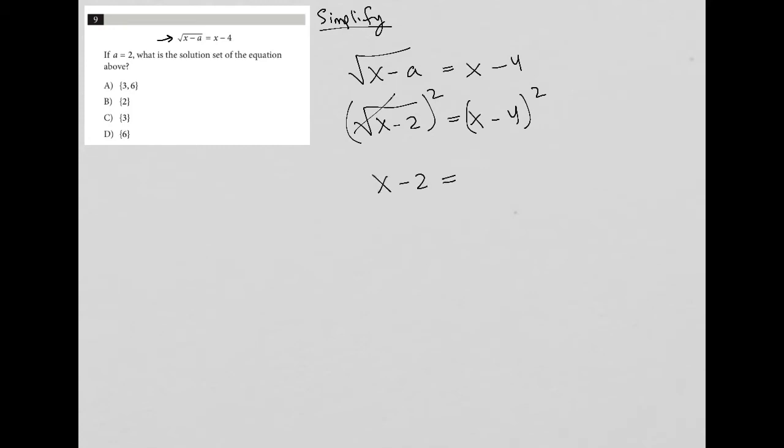And then when I square this x minus 4, it becomes x minus 4 times x minus 4, which I can use the FOIL method to simplify.